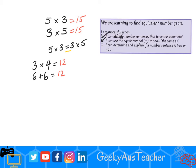So I can say 3 times 4 equals, or is the same as, 6 plus 6. I know that this number sentence is true because both sides equal the same.